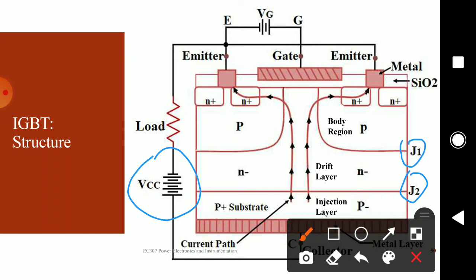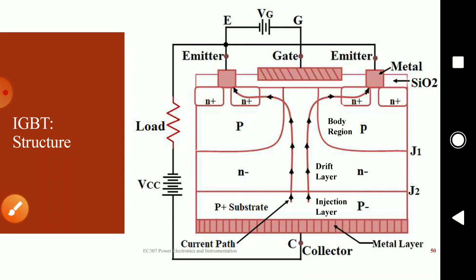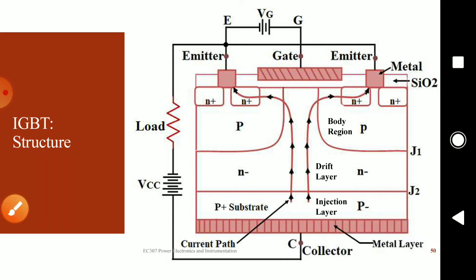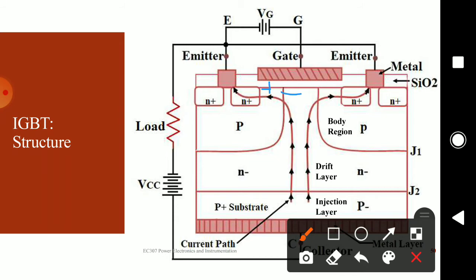The working is similar to that of the MOSFET. When you are applying a positive voltage to the gate, negative charge is induced right below the gate terminal, and this leads to a positive charge being induced at the bottom of the silicon dioxide layer. Because of this, an N-channel negative charge is induced within the P body region, forming an N-channel within the P body. This leads to the forward biasing of junction J2, and you can see that electrons will start to flow, causing current to flow from the collector to the emitter.